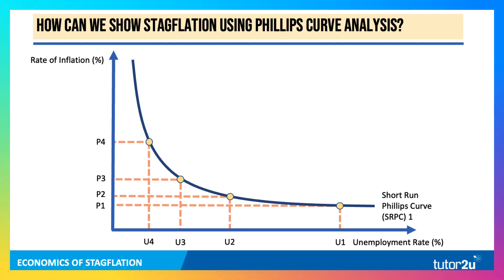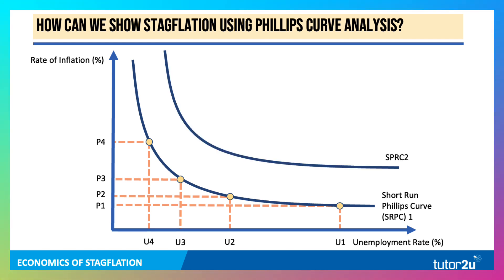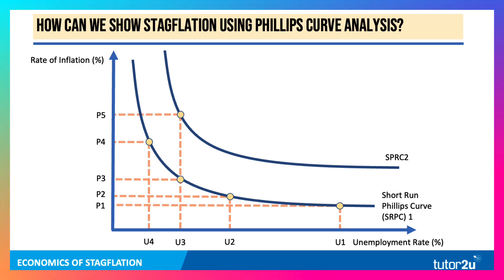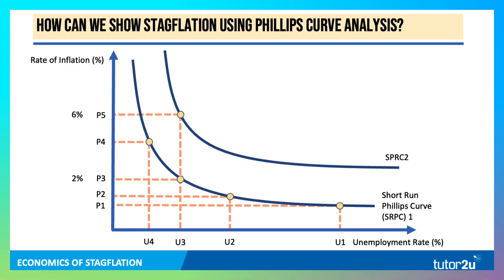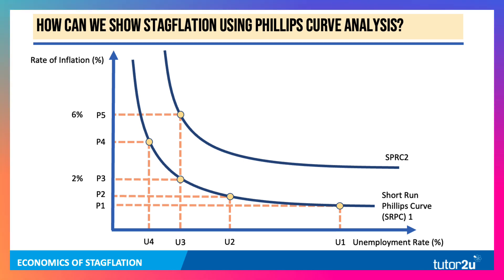Here's a Phillips curve diagram showing the inverse non-linear relationship between unemployment and inflation. As unemployment falls from U1 down to U4, inflation starts to accelerate. But if there's stagflation, the Phillips curve shifts upwards. For example, at U3, instead of inflation being 2%, it could rise to 6%. The danger then is that people start to expect higher inflation. So that shift in the Phillips curve is one way of illustrating potential stagflation.